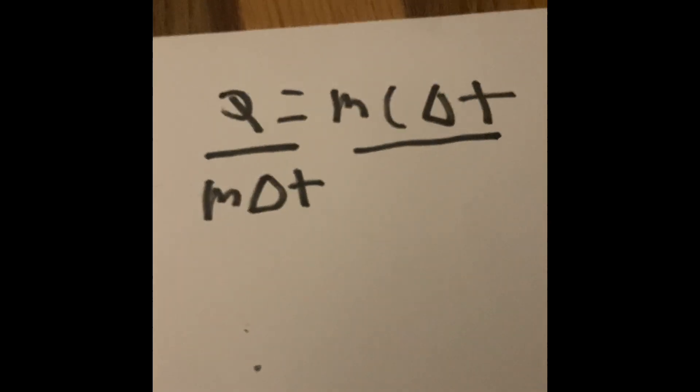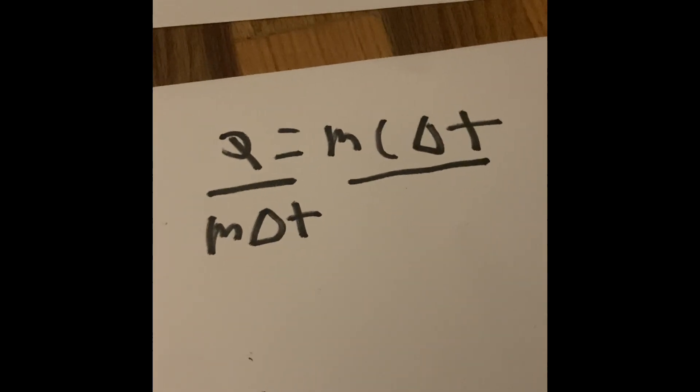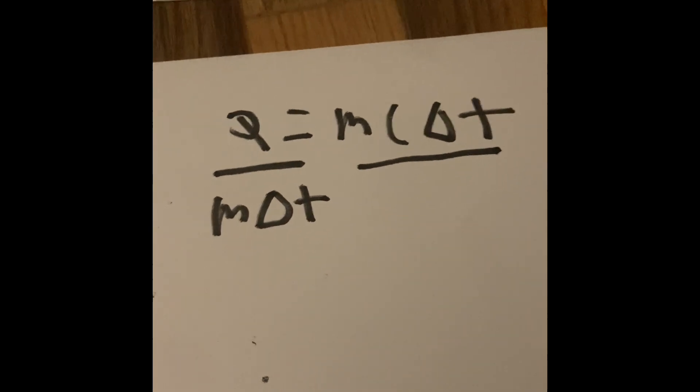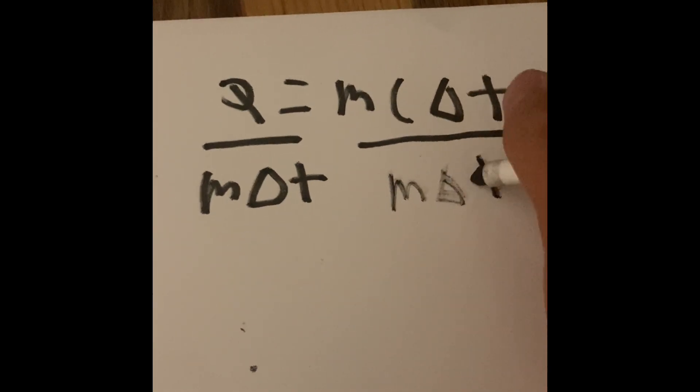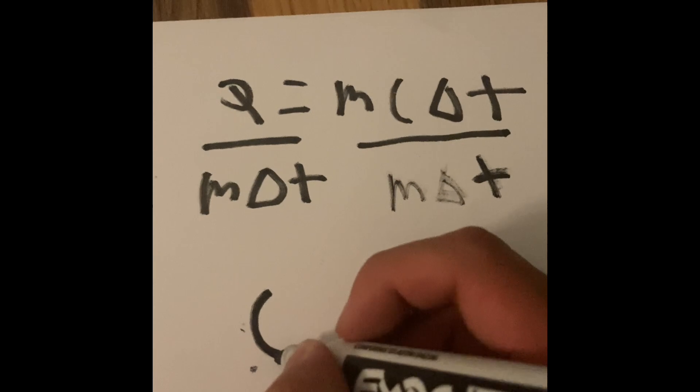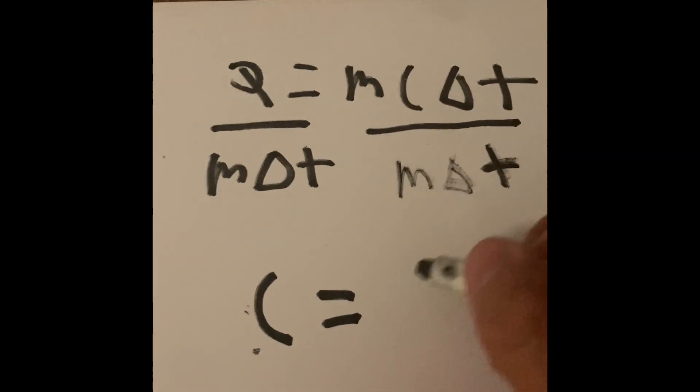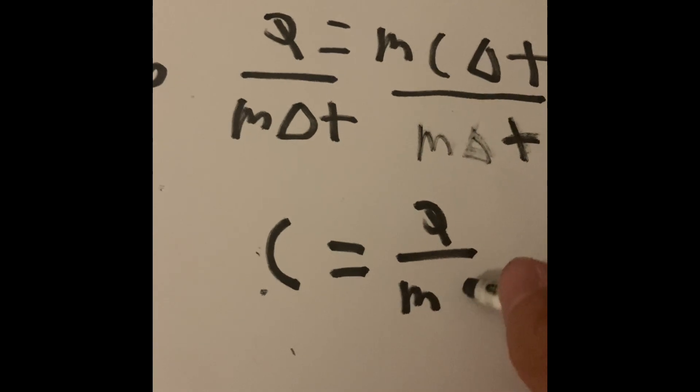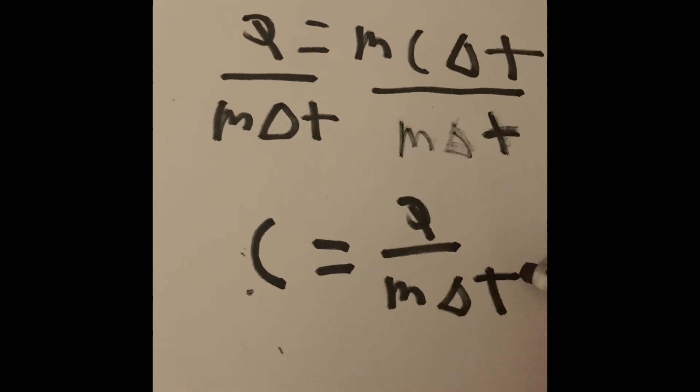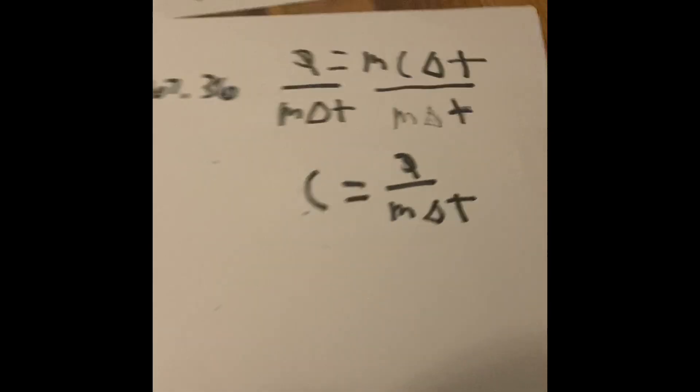We literally, because, get it? In literal equations, we literally isolate the letter C because we want to find what C is, the specific heat of the silver. So Q divided by mass times the change in temperature.